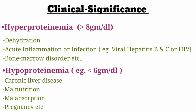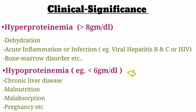To summarize the clinical significance: if proteins are more than 8 grams per deciliter, the condition is hyperproteinemia. If proteins are less than 6 grams per deciliter, the condition is hypoproteinemia, and its causes include chronic liver disease, malnutrition, malabsorption, and pregnancy.